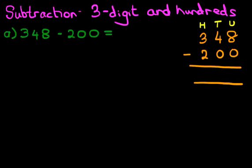So the first stage is done. We have successfully rewritten the question from the horizontal format into the vertical format. We are now ready to go ahead and do the calculation. Remember, we are minusing, and we always start with the column on the right-hand side first. What is eight minus zero? The answer is eight.